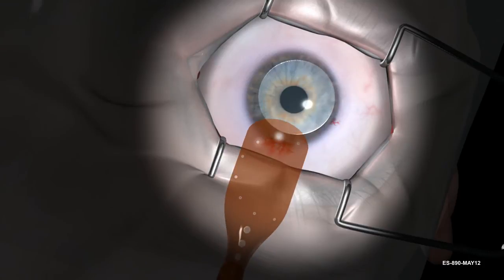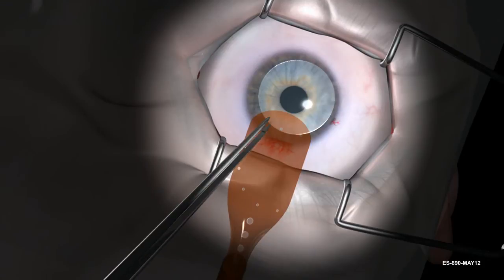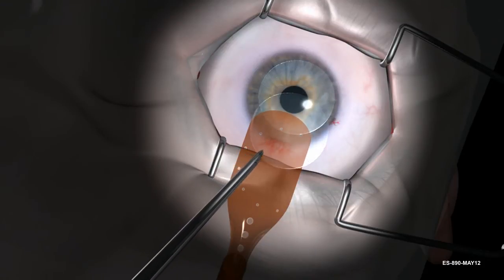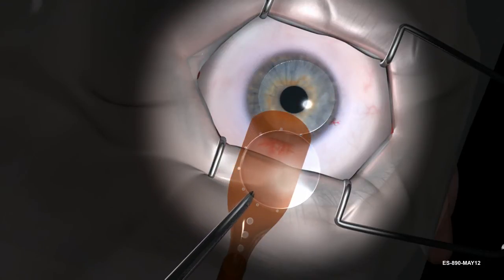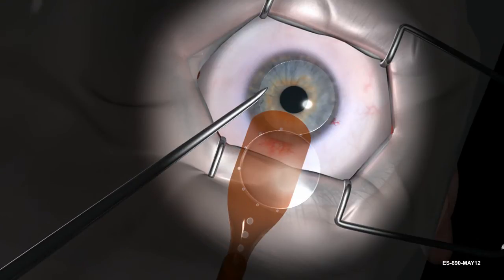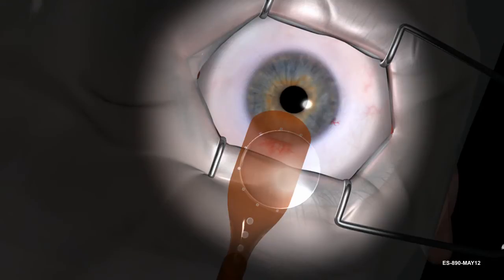Set the donor tissue within the boundary of the alignment holes on the carrier. Larger diameter allografts will overhang the carrier on the open side of the alignment holes. Do not allow the donor tissue to extend past the front end of the carrier or drape below the edge of the carrier.